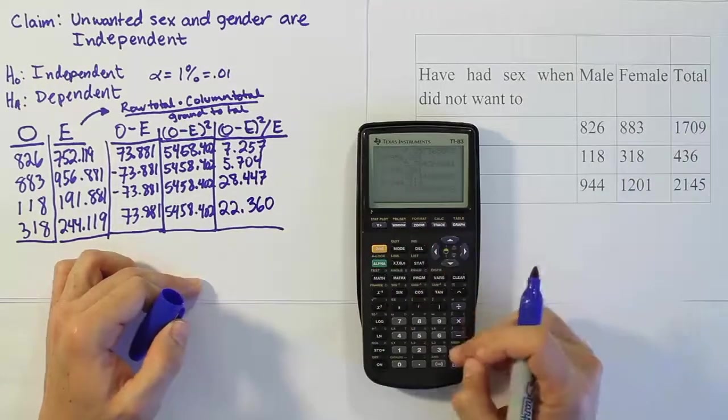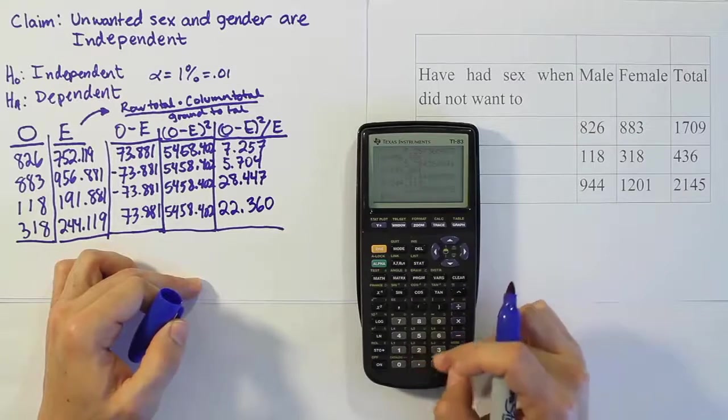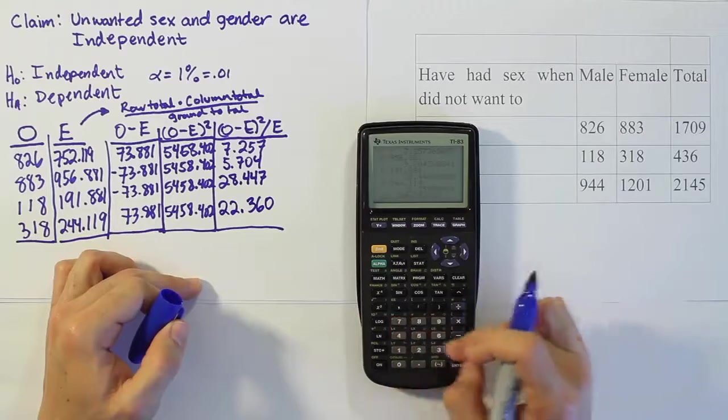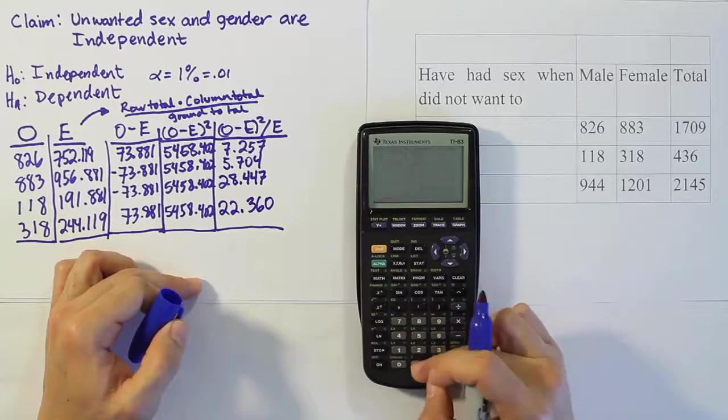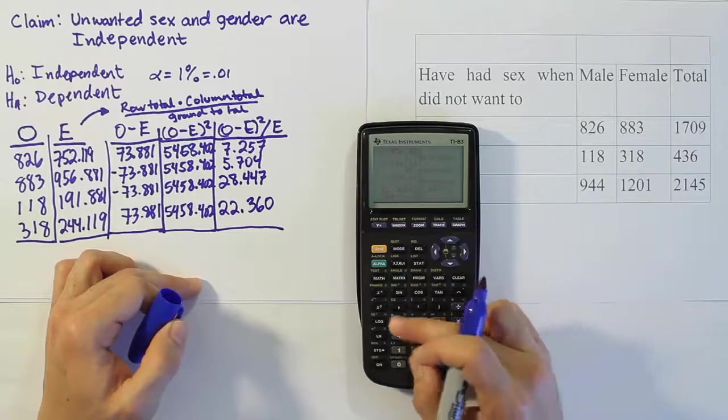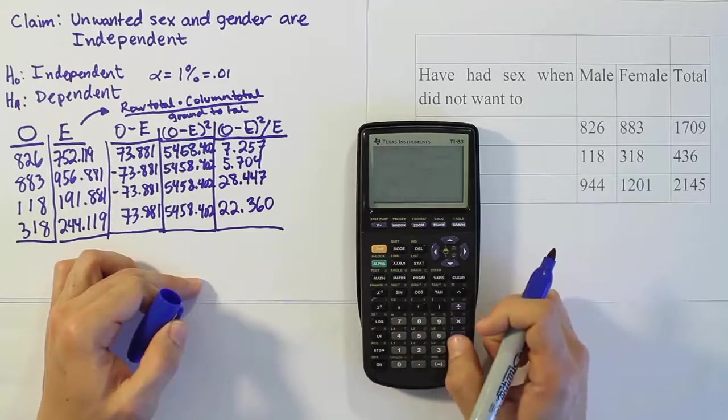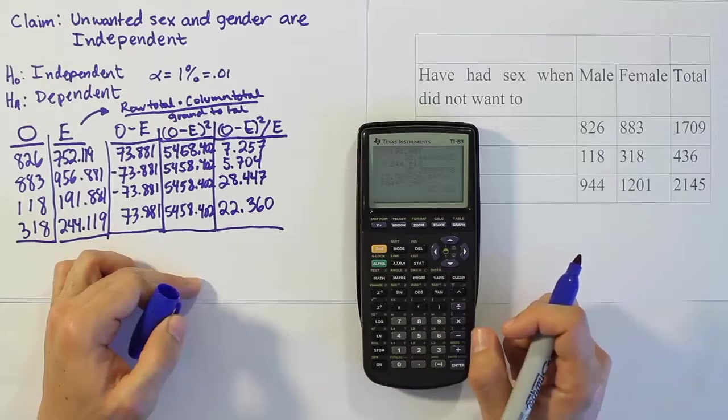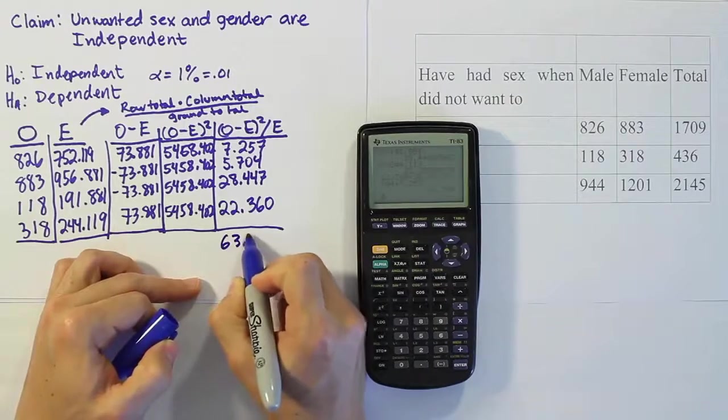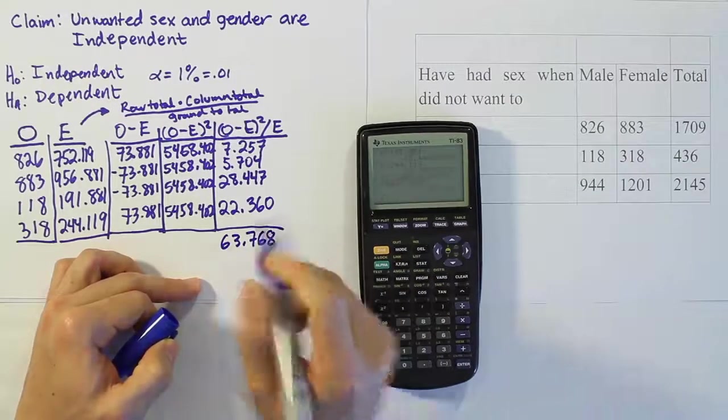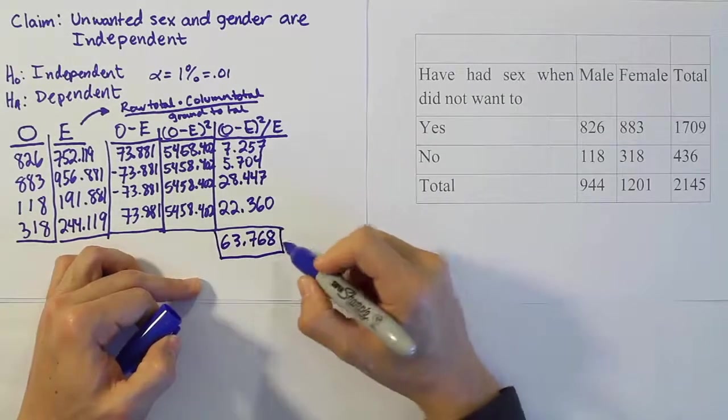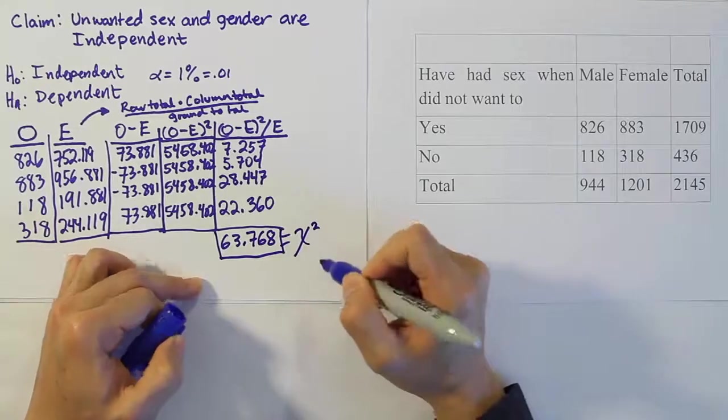Let's total that up and see what we got. It's that answer 22.360 added to 28.447, added to 5.704, added to 7.257. And we get the answer 63.768. Now let's keep in mind that is our chi-squared test statistic.